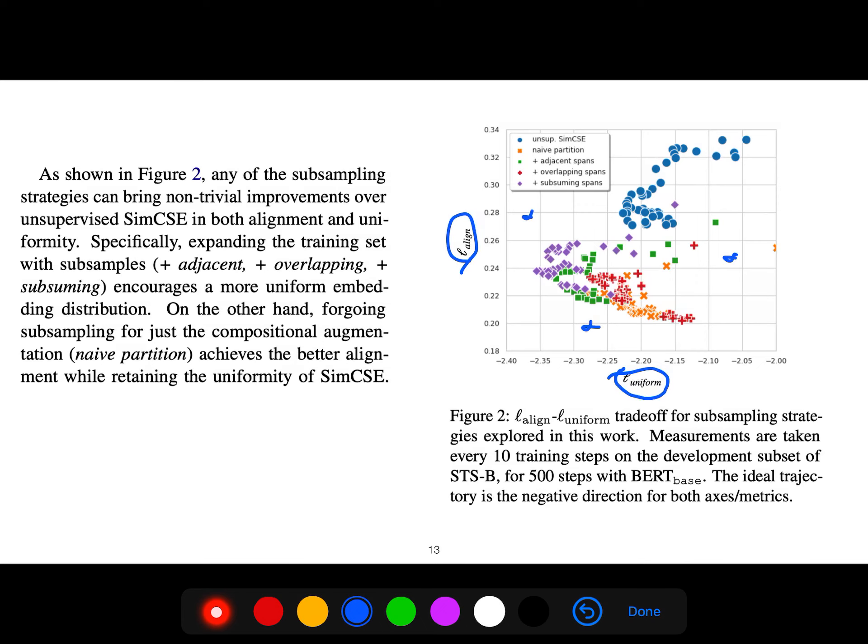However, any of the subsampling strategies can bring non-trivial improvement over unsupervised SimCSE in both alignment and uniformity. Specifically, expanding the training set with adjacent, overlapping, and subsuming subsamples encourages a more uniform embedding distribution. On the other hand, foregoing subsampling for just the compositional augmentation, which is naive partition, achieves better alignment while retaining the uniformity. So you miss something if you get something else.